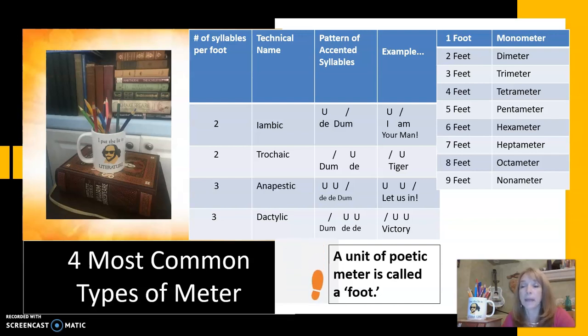And so to learn the number per line idea, you just need to memorize the Latin words that represent the numbers. So one foot is monometer, two is dimeter, three feet trimeter, four tetrameter, five pentameter, six hexameter, seven heptameter, eight octameter, and nine nanometer.